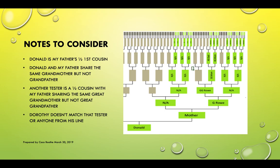She doesn't match anyone under his branch — there are several people who tested from his side of the family and she matches none of them. Let's go through it. Here you can see Donald's name, and Donald's father's side is grayed out.